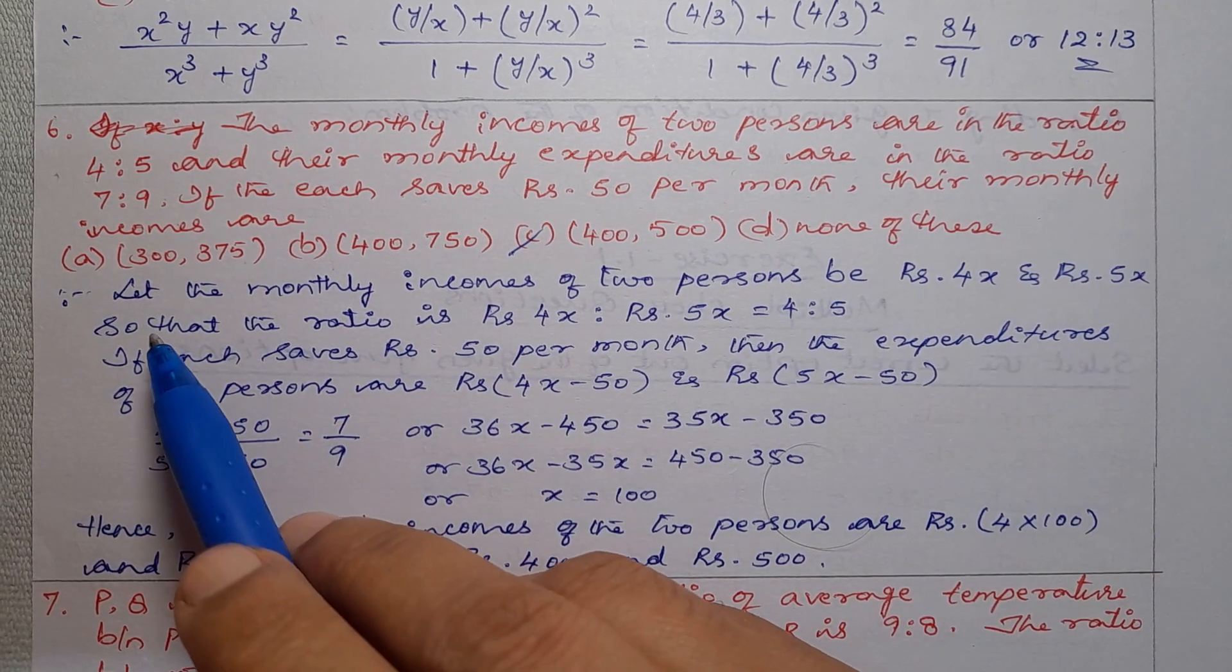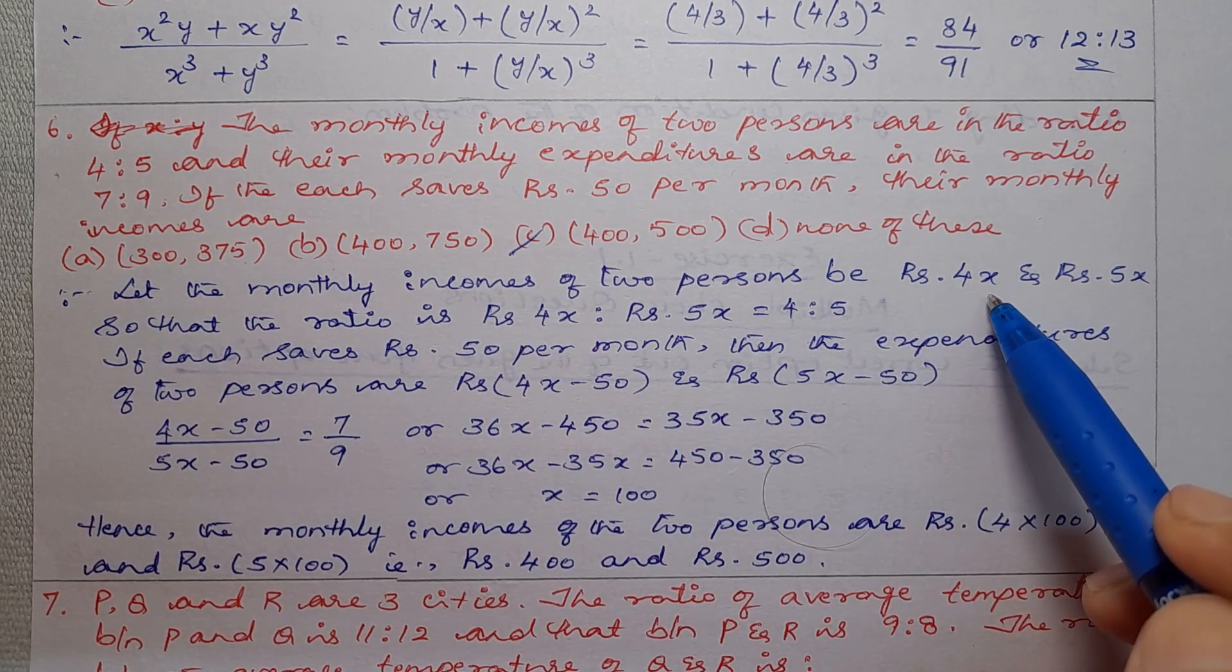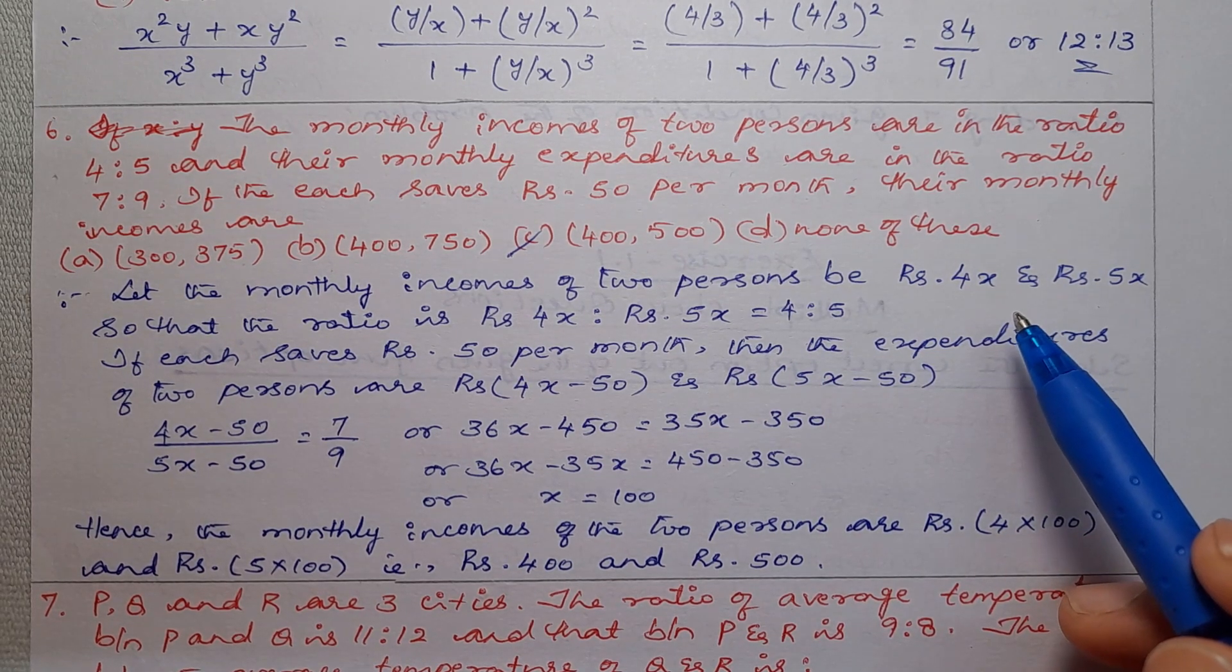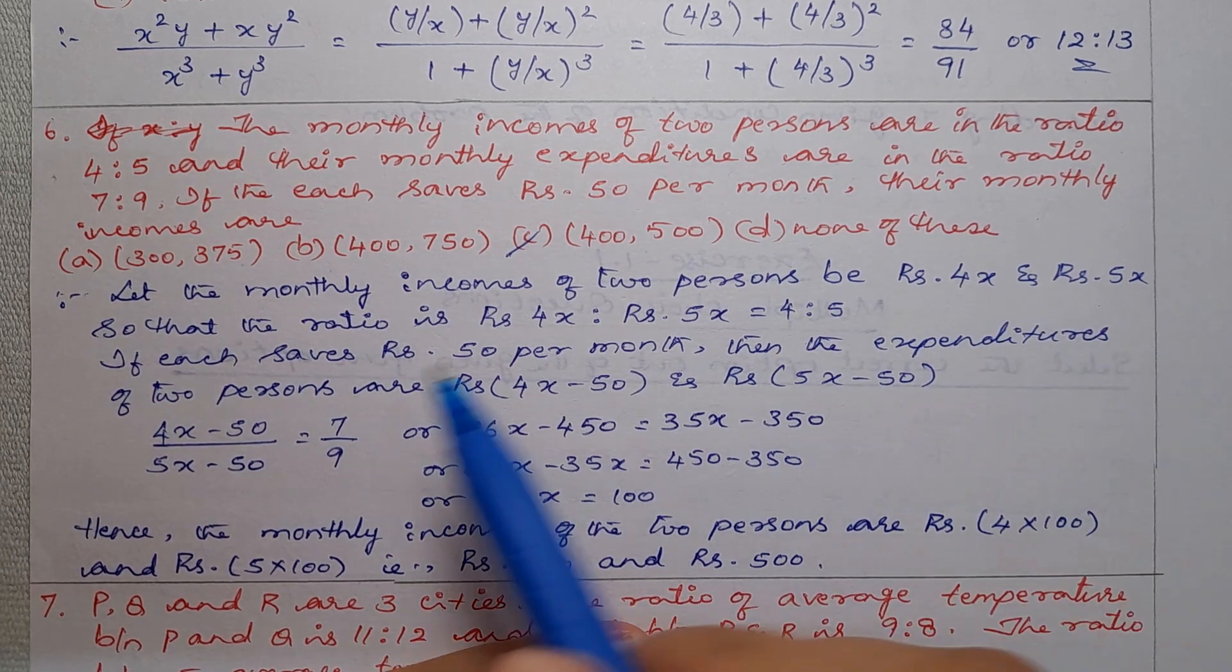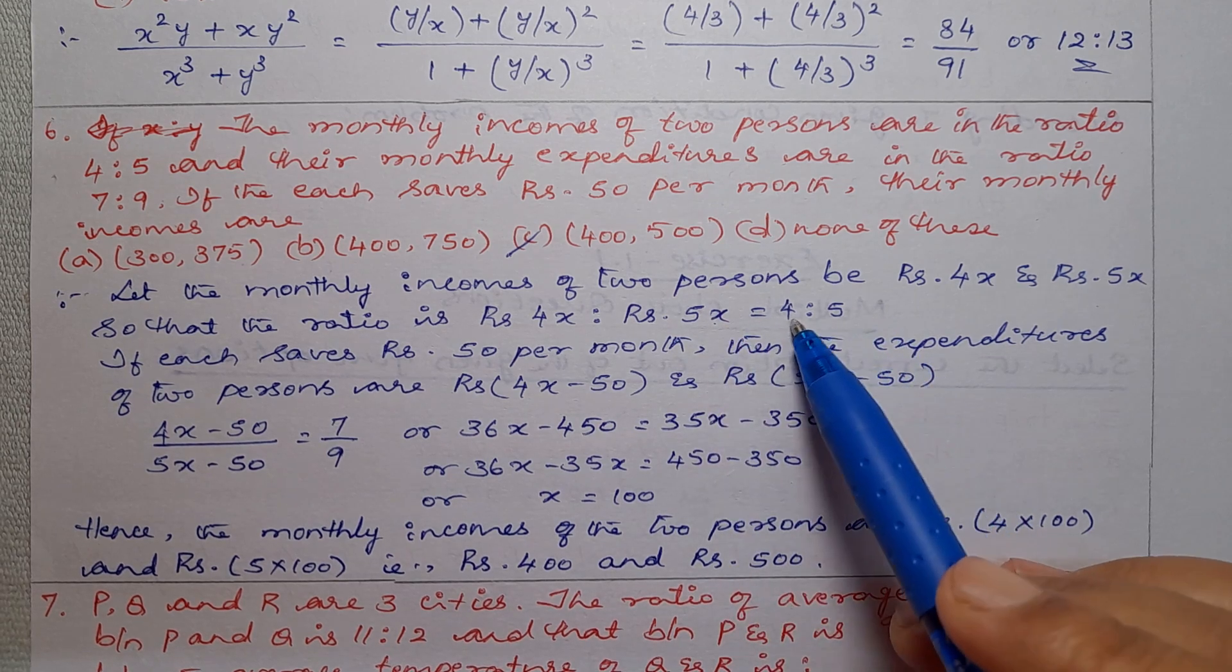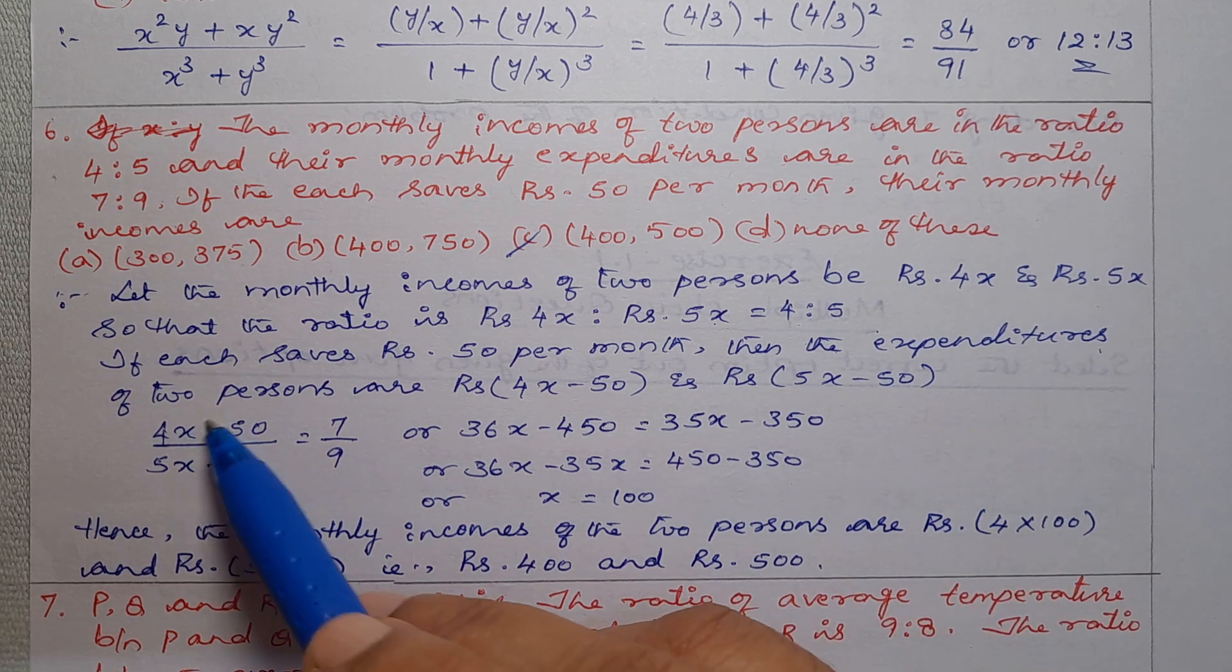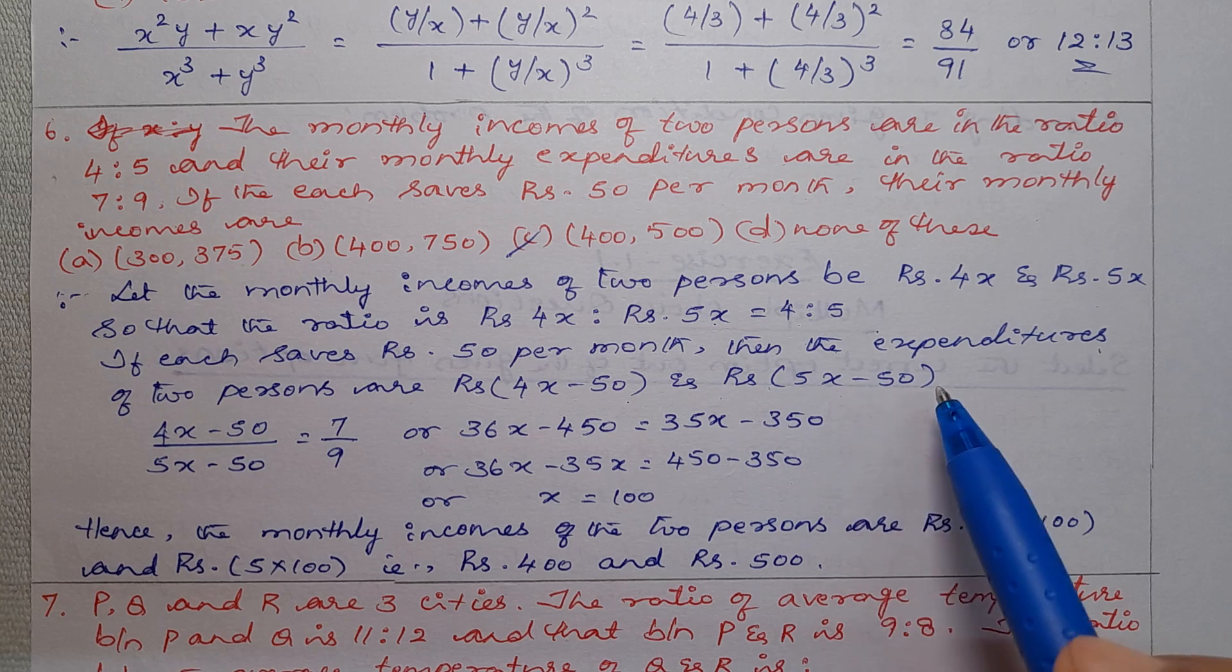Let the monthly incomes of 2 persons be rupees 4x and rupees 5x, so that the ratio is rupees 4x to rupees 5x equal to 4 to 5. If each saves rupees 50 per month, then the expenditures of 2 persons are rupees 4x minus 50 and rupees 5x minus 50.